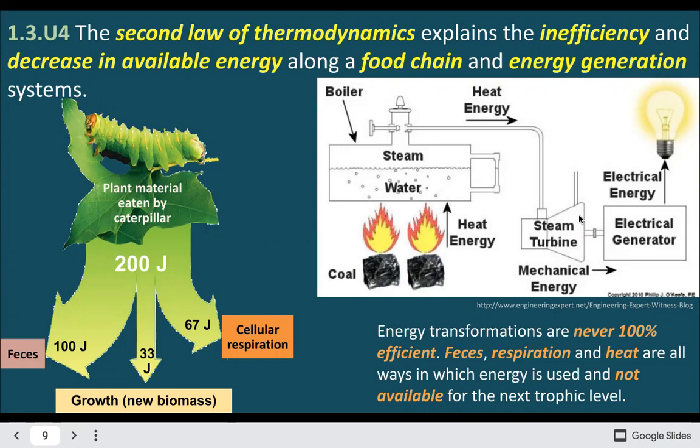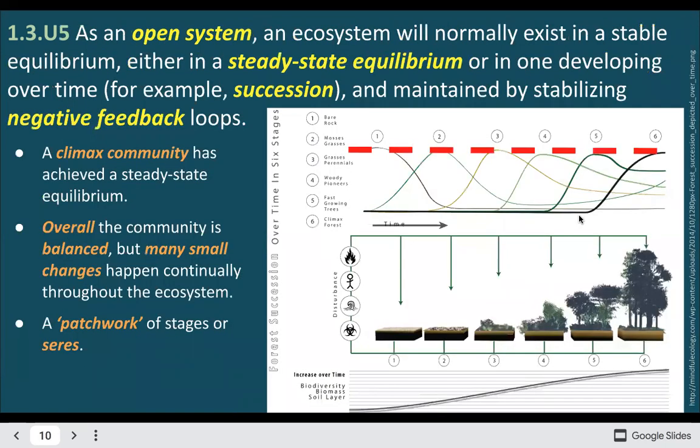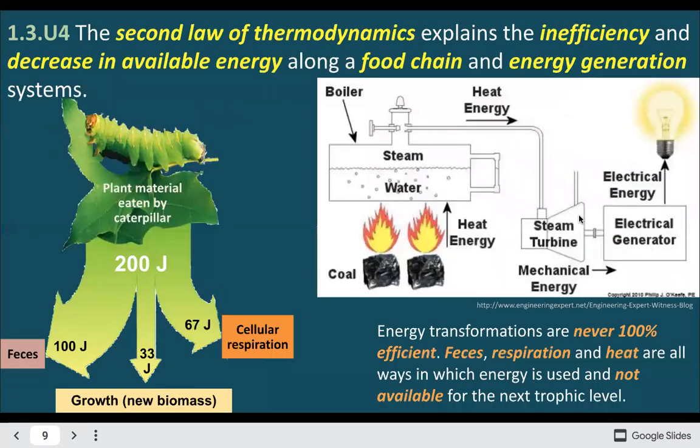For example, a computer charging box gets a little bit warm — that warmth is energy that could be electricity to charge the computer, but instead it's wasted as heat. That's basically the gist of the second law: never going to be 100% efficient. There's no such thing as infinite motion machines, and in food chains we're only getting 10% of the energy from the previous level.